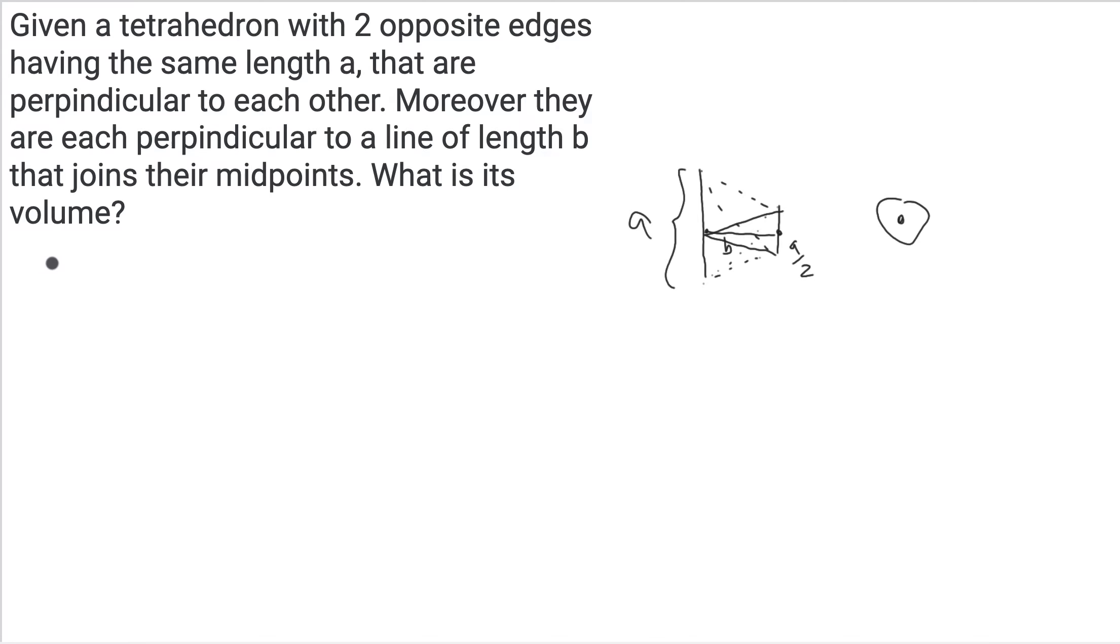First we'll note the volume of a pyramid is one-third base times height. For this problem, we need to find the base of this tetrahedron. Let's consider this top tetrahedron right now, and I'll fill it in to make it easier to consider. Once we figure out the volume of this, we're going to double it by symmetry to get the total volume.